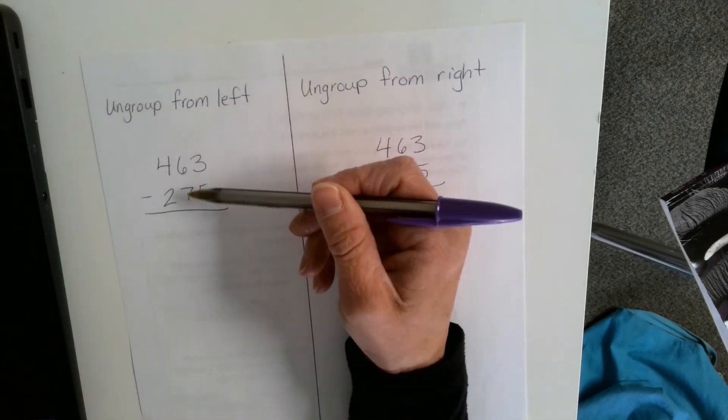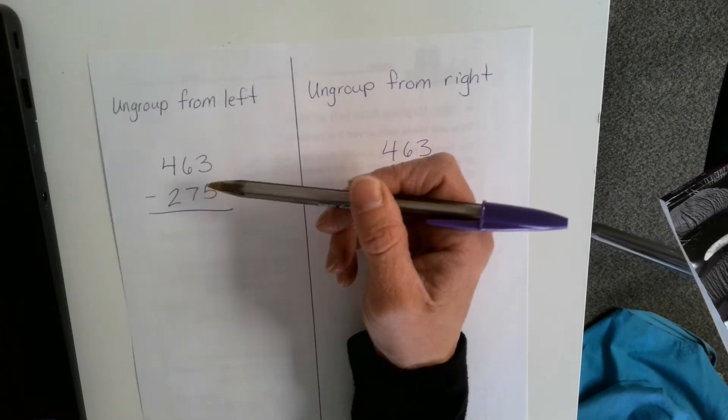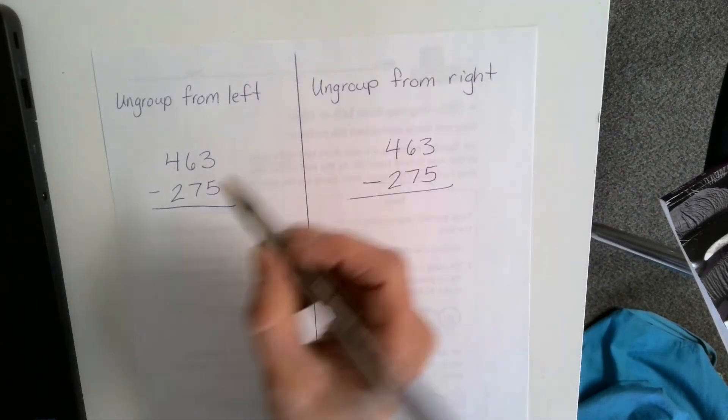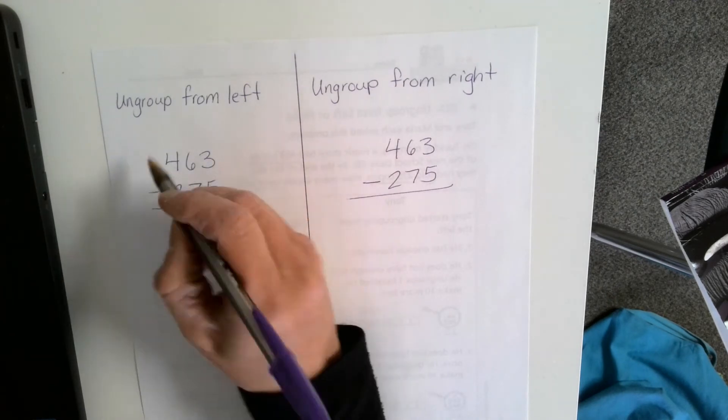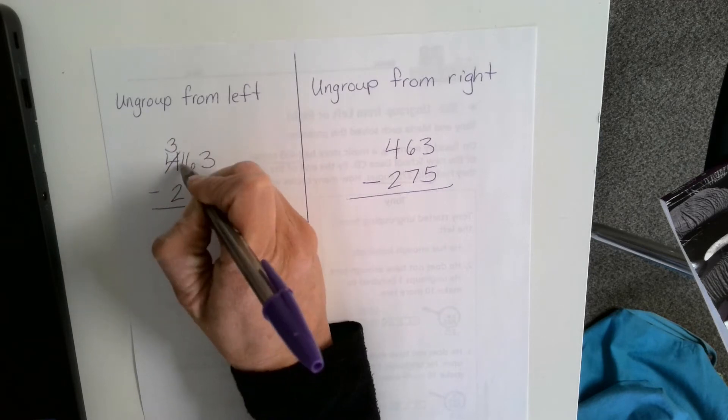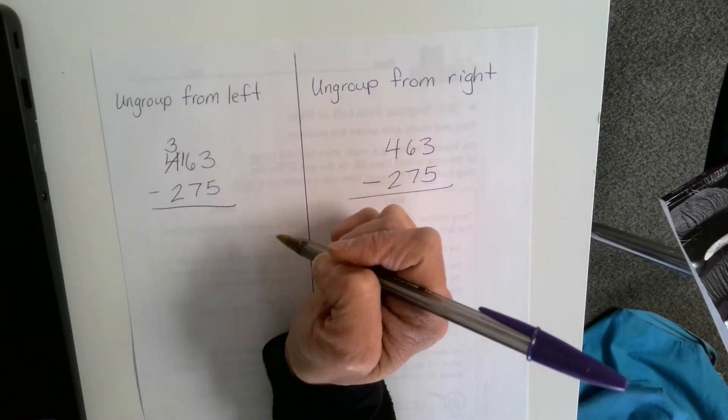Now I'm going to look at my tens place. 6 minus 7. Can I do that? Nope. If I had six cookies, I can't give seven away. So I do need to ungroup. I'm going to get rid of this 4, make it a 3, take one away and make a new group here. So I have 16 minus 7.